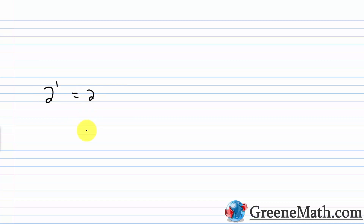With negative exponents, we're going to look at this using a pattern — the same pattern we use to show how a non-zero number raised to the power of zero equals one. I like to work with the number two. If I start with two to the first power, we know this is two. Then two squared — I take two and multiply it by two, because I have two factors of two, and that gives me four.